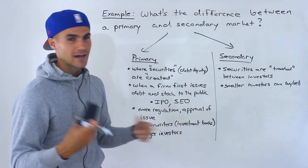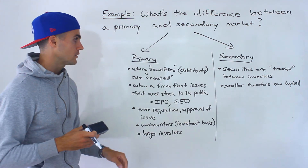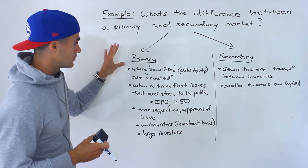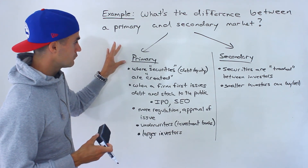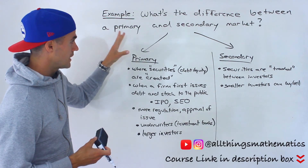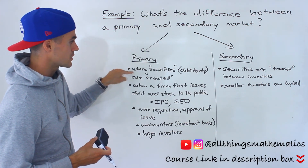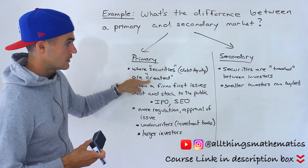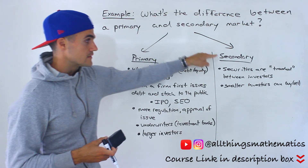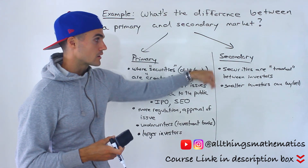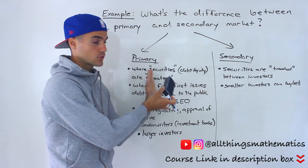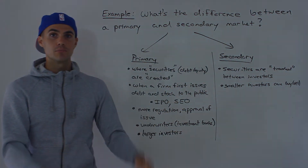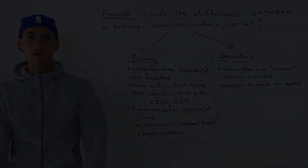So it's kind of like that. But yeah, so the main difference: in the primary market, it's where securities are created. And then in the secondary market, the already-created securities are traded between investors.